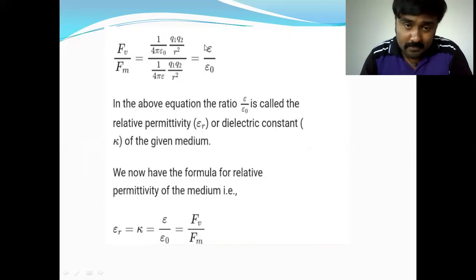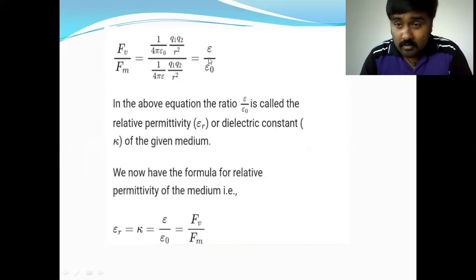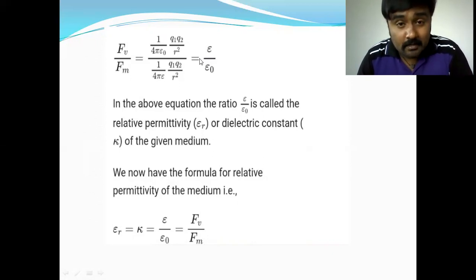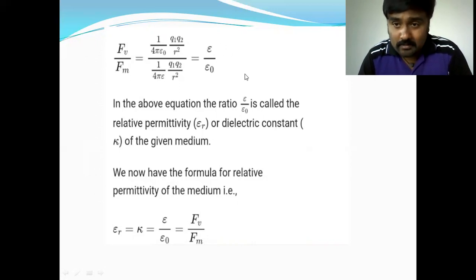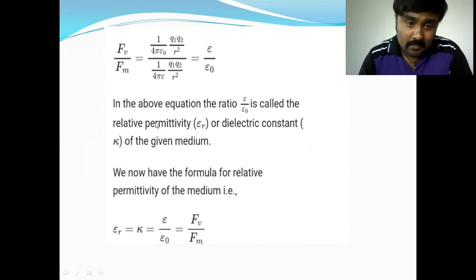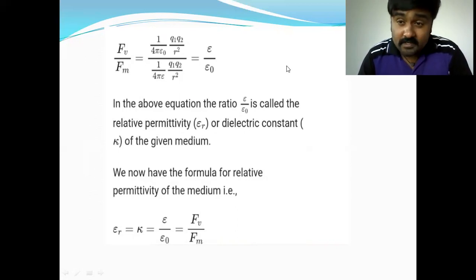This ratio epsilon / epsilon-naught is called the dielectric constant or relative permittivity. For air, epsilon equals epsilon-naught, so the dielectric constant is one. For water, the dielectric constant is 80. For metals, the dielectric constant is infinity.